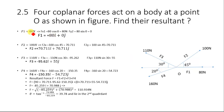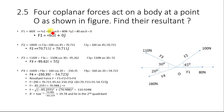F1 is along the horizontal axis at 0 degrees, so its y-component is zero (sine 0 = 0) and its x-component is 80 newtons. Therefore F1 = 80i + 0j.